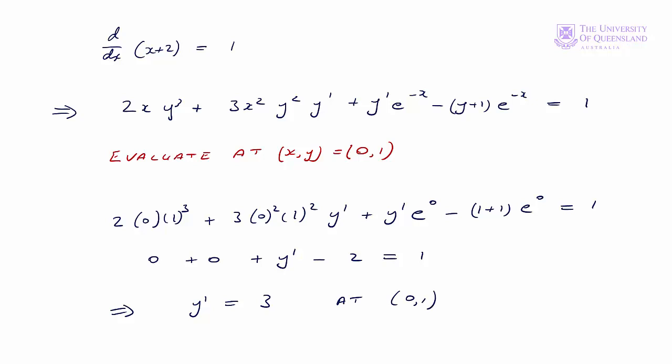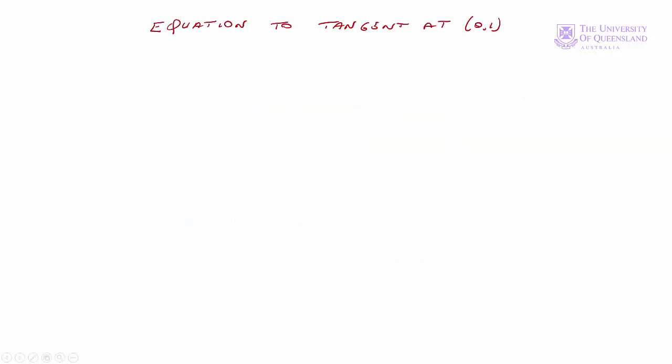We have the slope at point (0,1), we want to find the equation to the tangent at that point. Recall the equation to the tangent when x equals a is y minus f(a) is equal to f prime(a) times (x minus a).